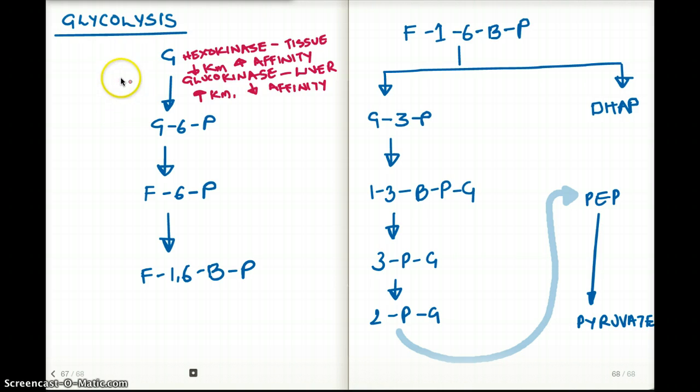From glucose to glucose 6-phosphate, we're using one molecule of ATP, turning ATP to ADP. We're also using magnesium as the ion. So that's the first step.